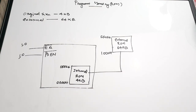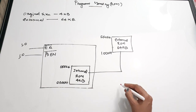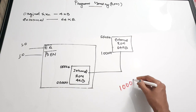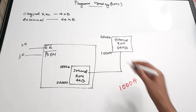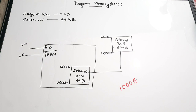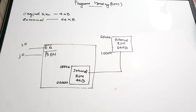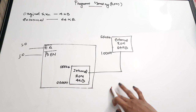If the internal ROM is insufficient, it can connect an external ROM of size 64 kilobytes — that is kilobytes, not bits. The address for the external ROM is 10000H to FFFFFH.